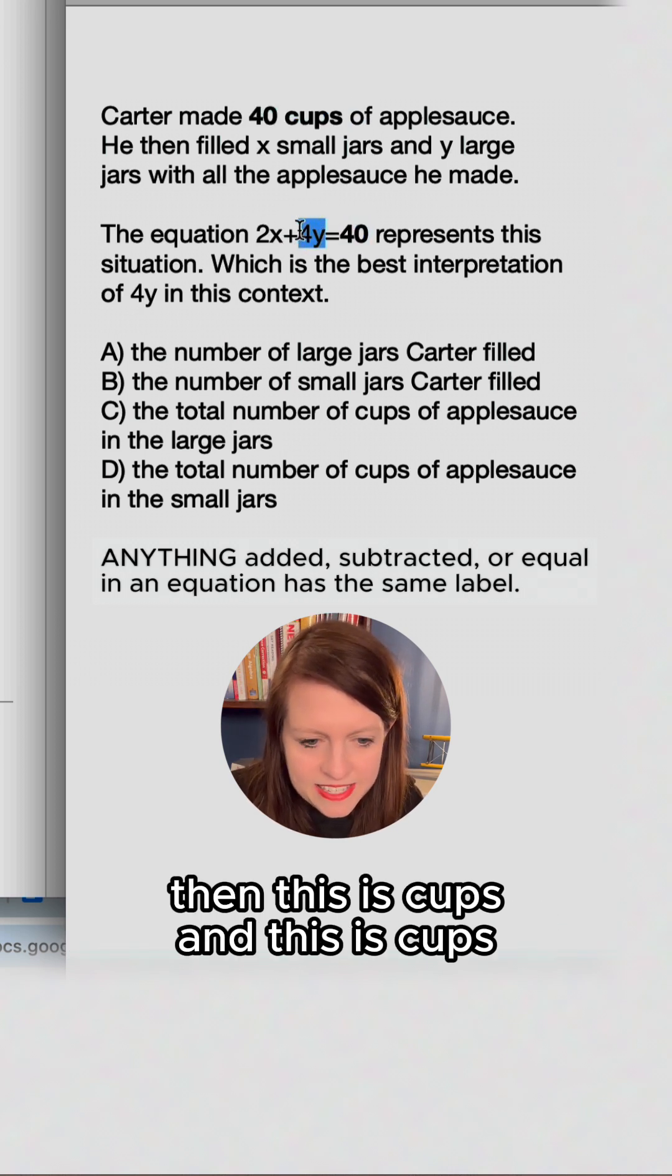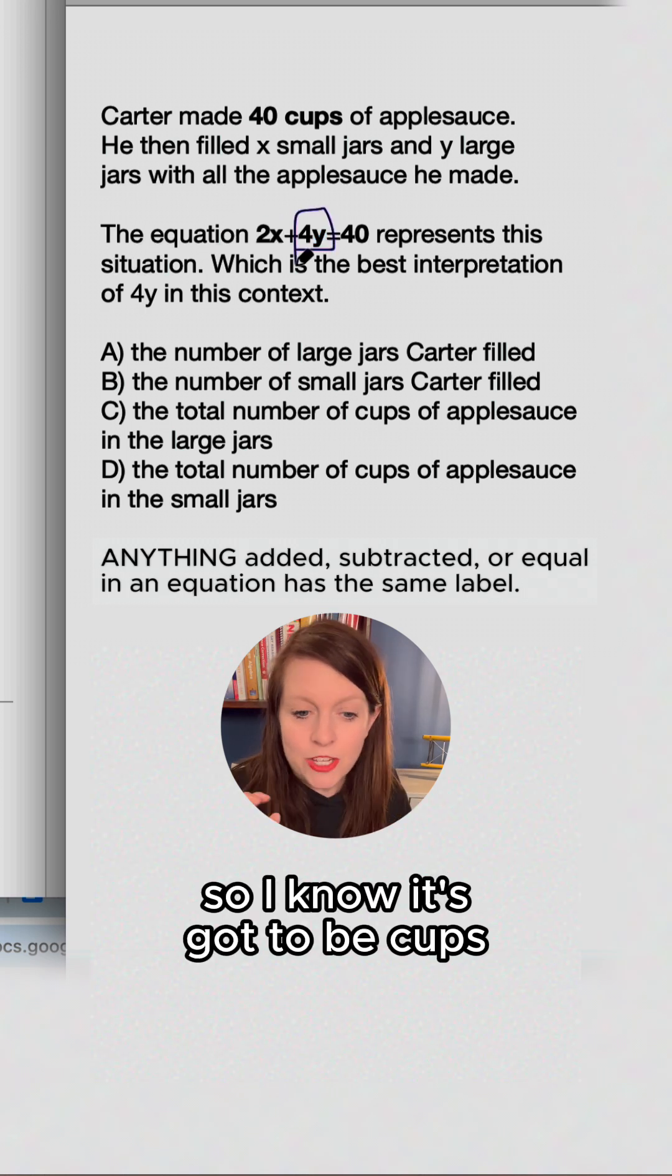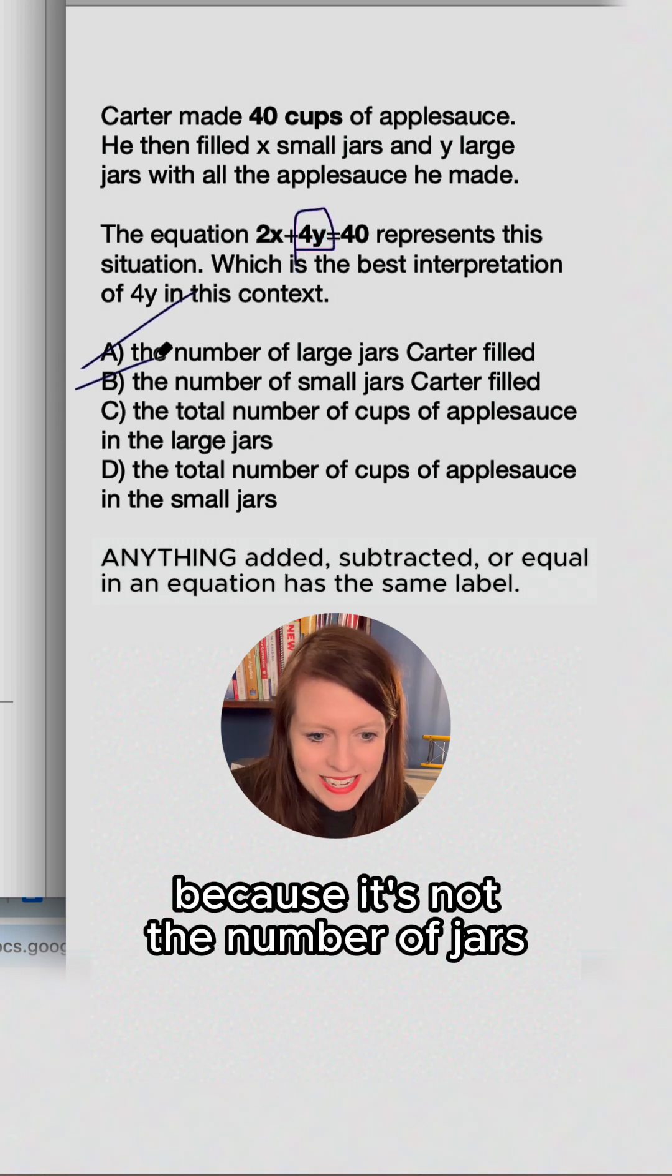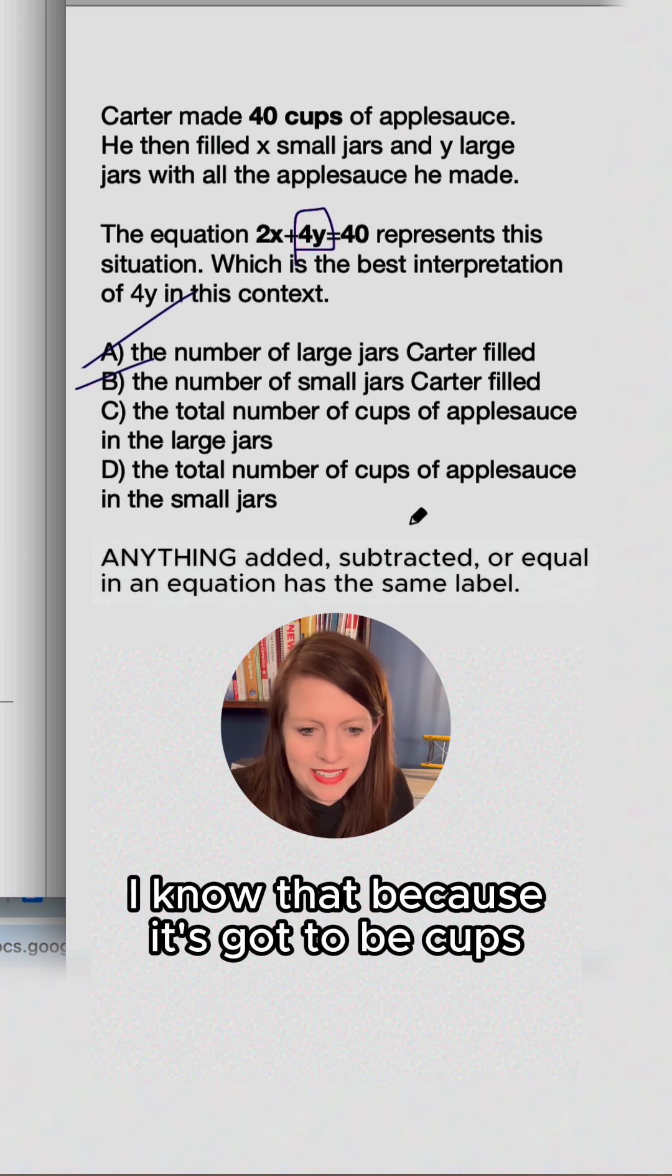If this is cups, then this is cups and this is cups. So I know it's got to be cups. So I instantly get rid of A and B because it's not the number of jars. I know that because it's got to be cups.